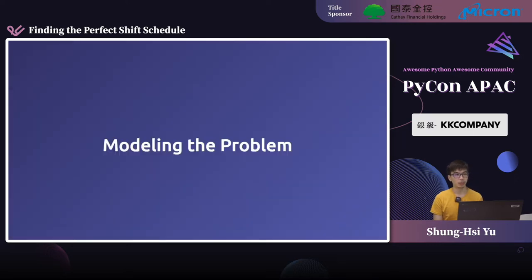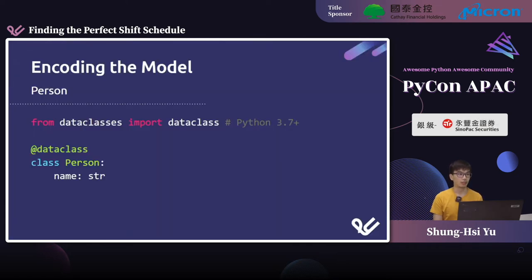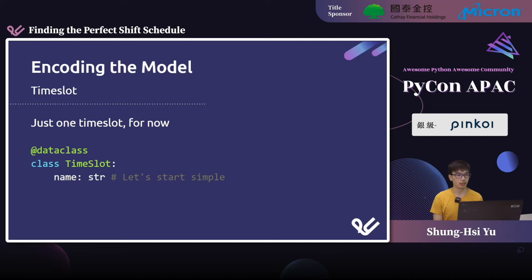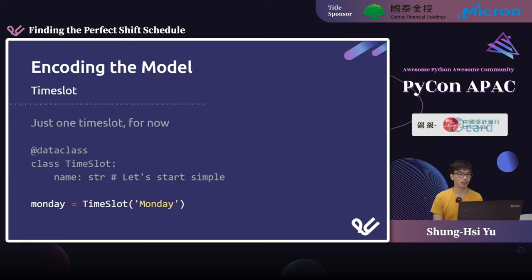So let's talk about how we model our problem so that the solver can understand it. First we create a Person class — I'm using dataclass, introduced in Python 3.7, so I don't need to write constructors manually, though a plain class works as well. From this Person class, I'm creating three instances: Alice, Bob, and Carol as our workers. We also create a TimeSlot class using dataclass, and right now to keep things simple I'm only having one time slot: Monday.